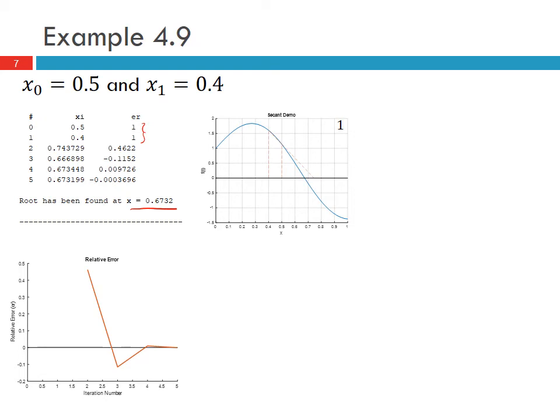In this demonstration, this is the plot of my function from 0 to 1. My two initial guesses were 0.5 and 0.4, and then I can find the value of my function at those two initial guesses. The line between them gives me my approximate slope or my tangent at that point, and then I continue that down until it intersects the x-axis, which gives me my estimate of the root.